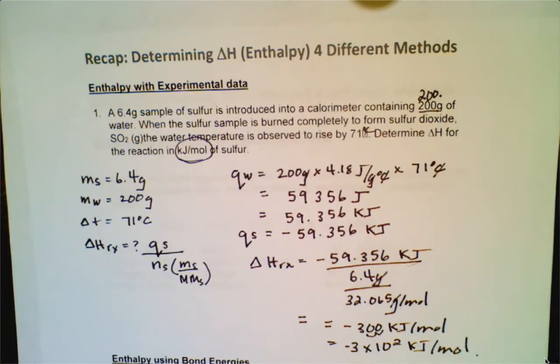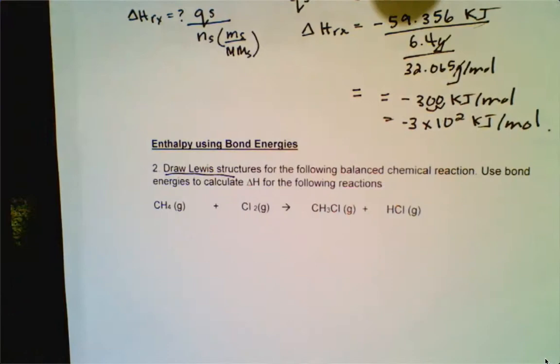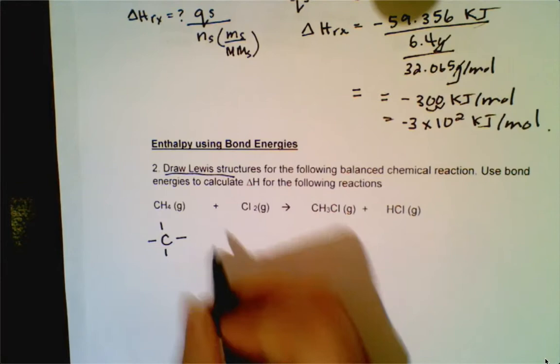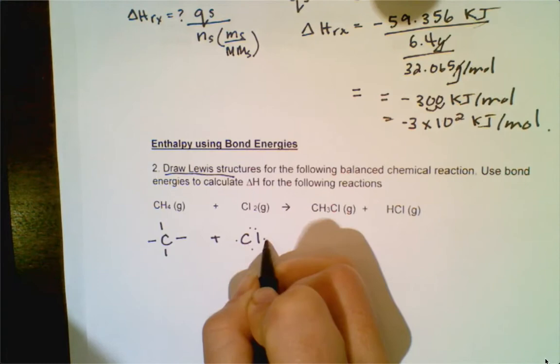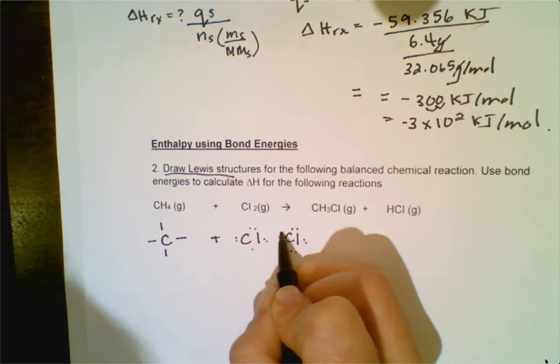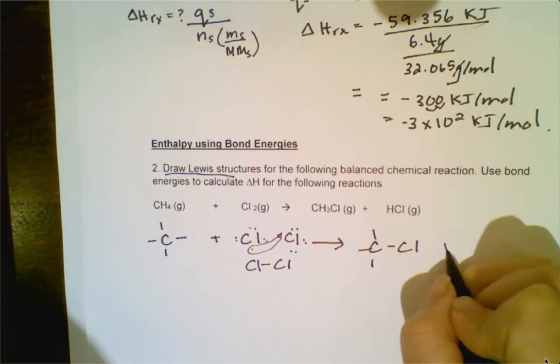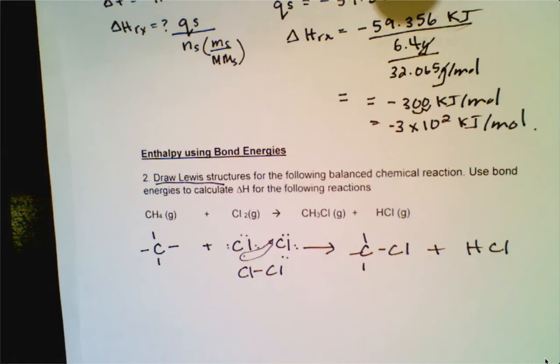For example number two, you want to use bond energies to determine the enthalpy value. You need to draw Lewis structures — this is where your organic unit comes into play. You've got methane plus chlorine gas. Chlorine has a valence of seven, so it forms one bond. Going around with Lewis dots, that gives one chloromethane and some HCl. You would then consult your bond energy table, which you can find on the thermal review.